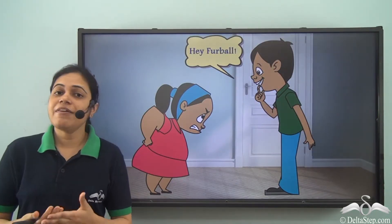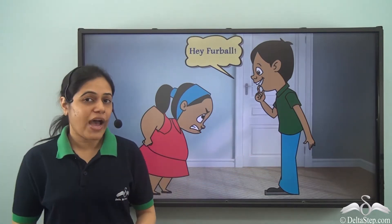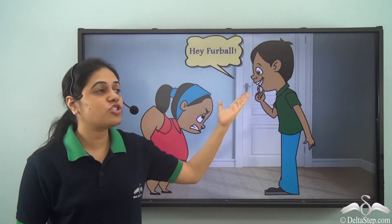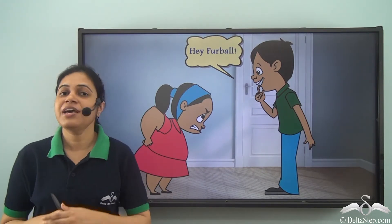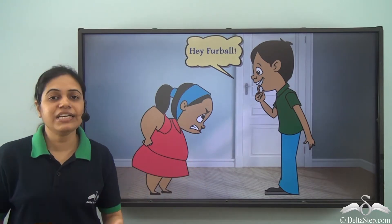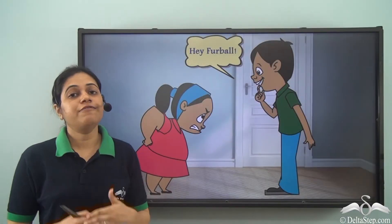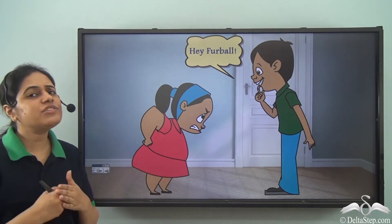Once there were two friends, Riya and Rohan. Rohan was tall and thin and Riya was short and fat, and that is why Rohan always used to tease Riya. He used to call her furball and Riya was really annoyed at it. They were very good friends and they really enjoyed playing video games together.